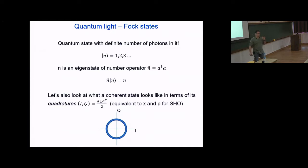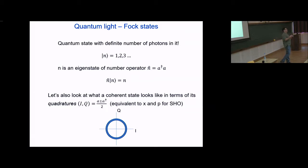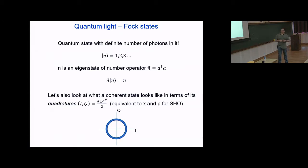Just to get everyone on the same page, I'm going to talk a little bit about quantum light, starting with everybody's favorite: the Fock state. We're going to imagine that you have some harmonic oscillator, quantize it, and find that a nice way to express its quantum state is in this number state basis — saying the harmonic oscillator has some number one, two, three, four, five photons in it, or some superposition thereof.